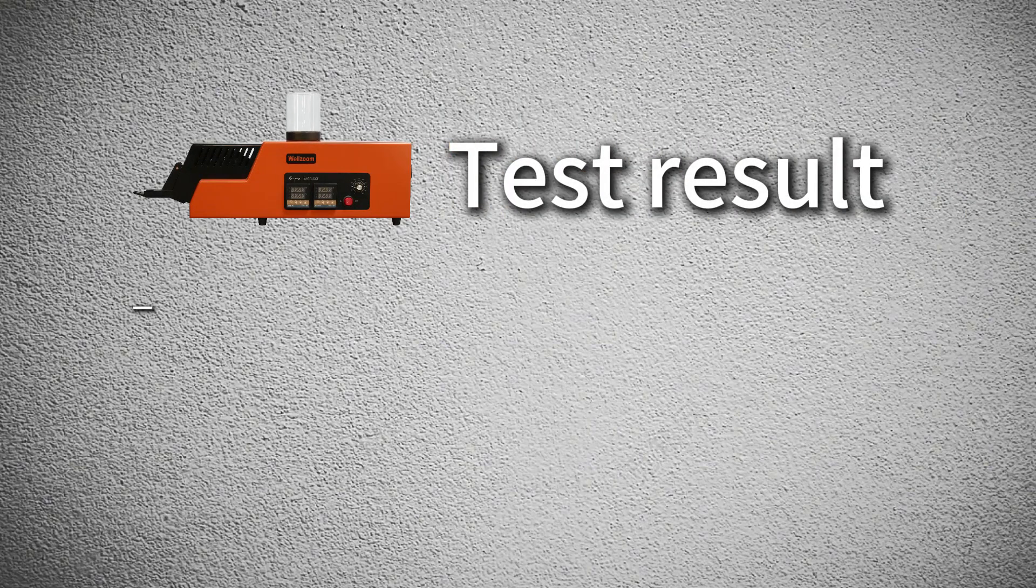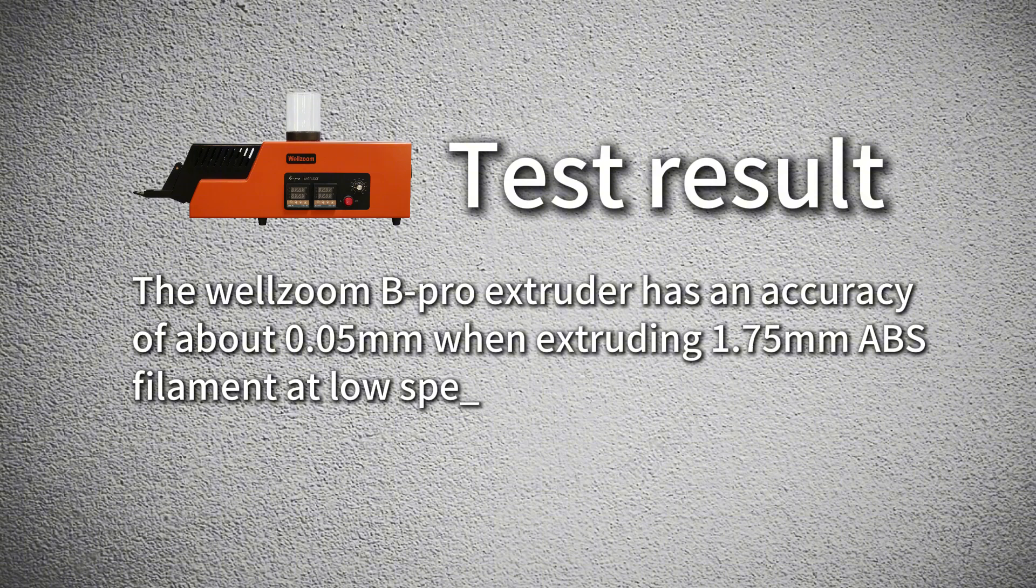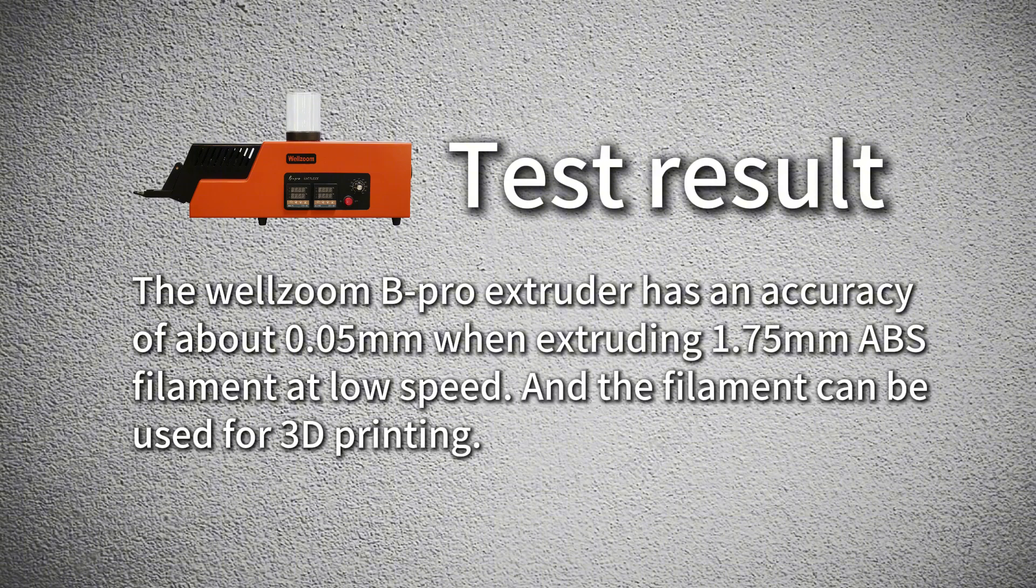Test result. The Wellzoom B Pro Extruder has an accuracy of about 0.05 mm when extruding a 1.75 mm filament at low speed, and the filament can be used for 3D printing.